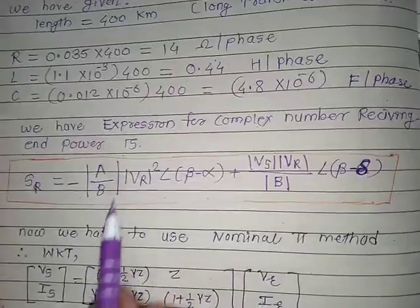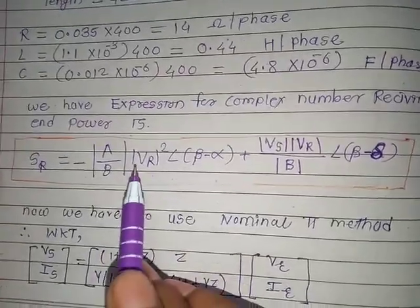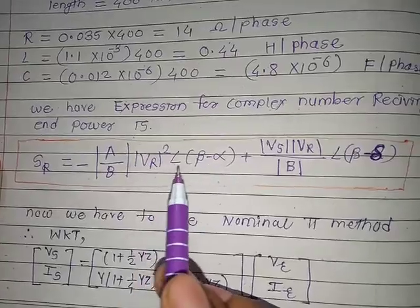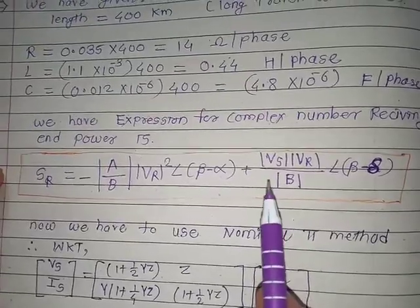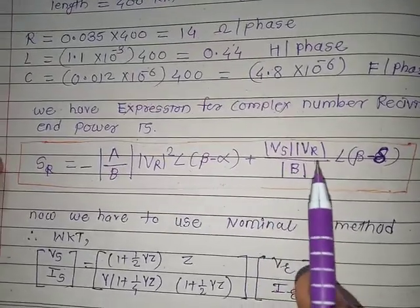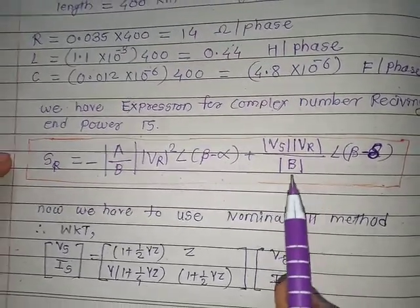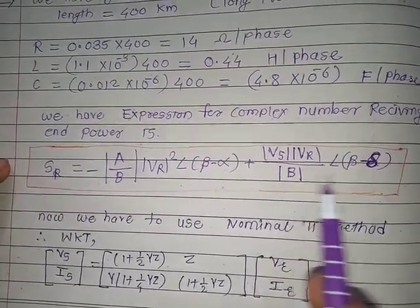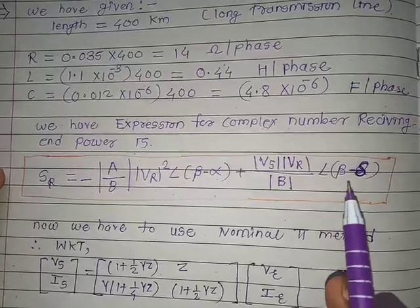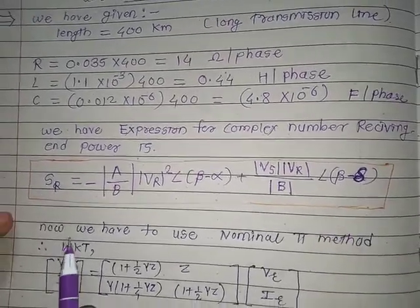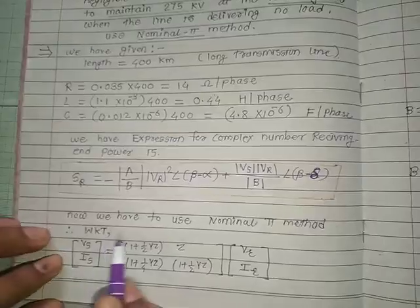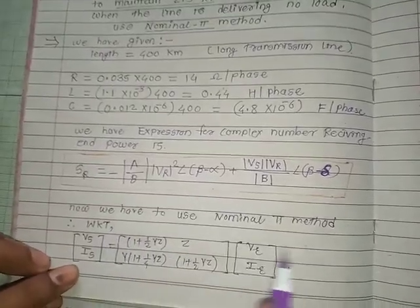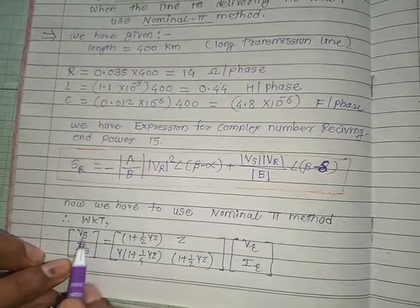The receiving end complex power Sr = −(|A|/|B|) × |Vr|² ∠(β − α) + (Vs × Vr / |B|) ∠(β − δ). We need to use the nominal pi method, and for the long transmission line we have the ABCD parameter formula: Vs = A·Vr + B·Ir.